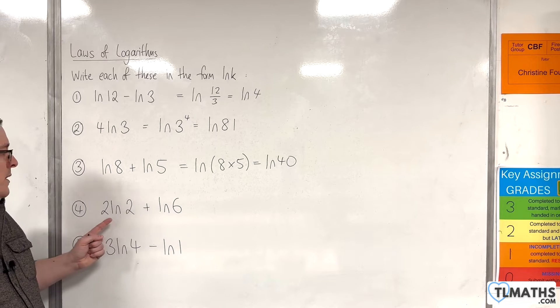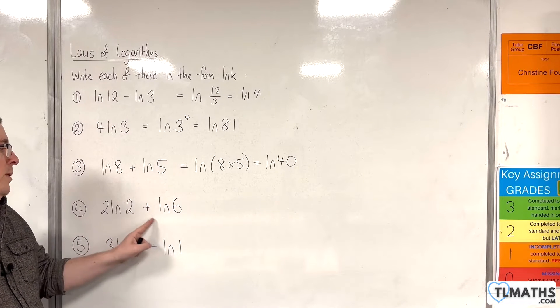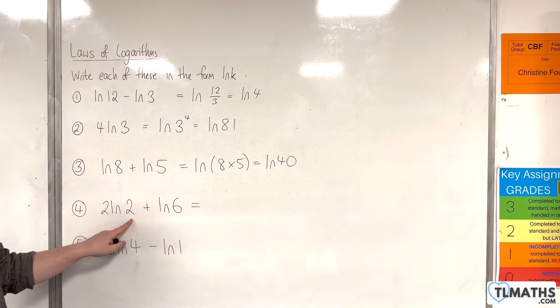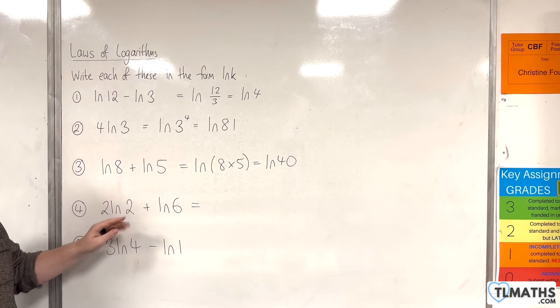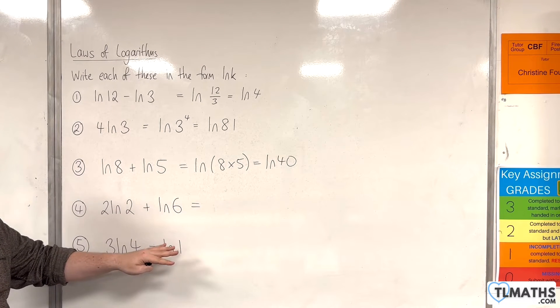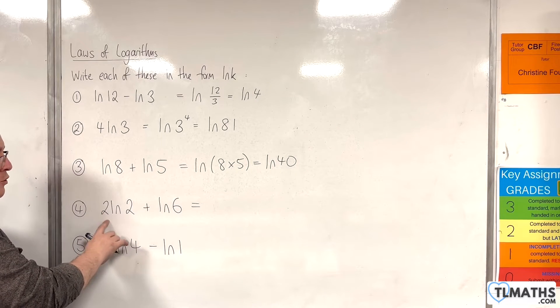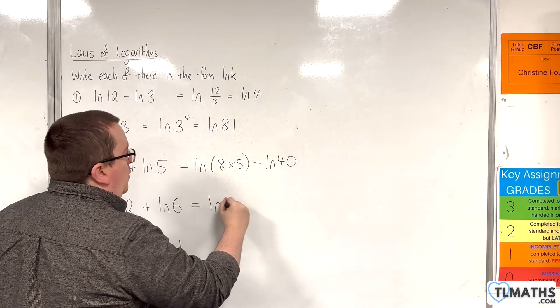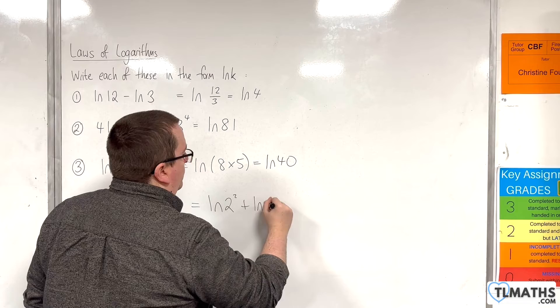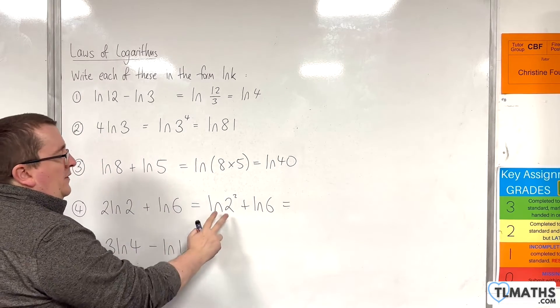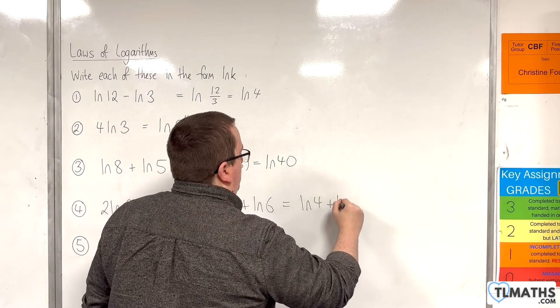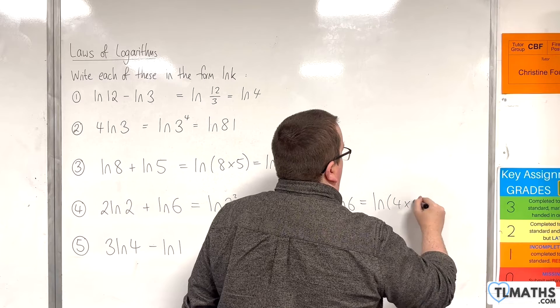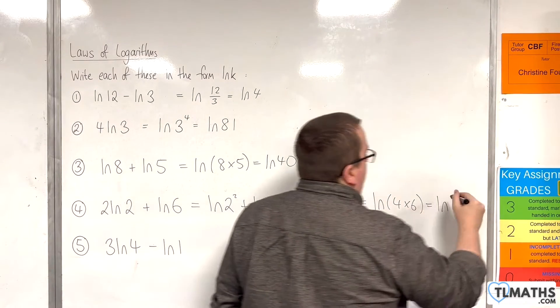For number 4 we have 2 times the natural log of 2 plus the natural log of 6. Before we do anything we must use the power rule to bring the 2 up to the power. We can't use the product rule straight off the bat, you've got to deal with the 2 in front of the logarithm first. So this is the natural log of 2 squared plus the natural log of 6, which is the natural log of 4 plus the natural log of 6, which is the natural log of 4 times 6, which is the natural log of 24.